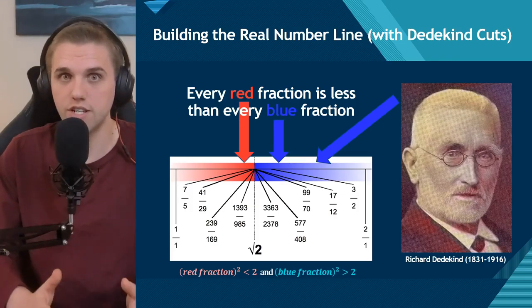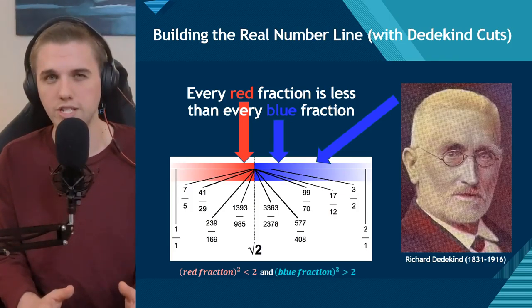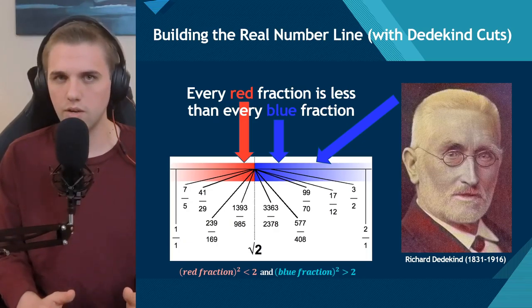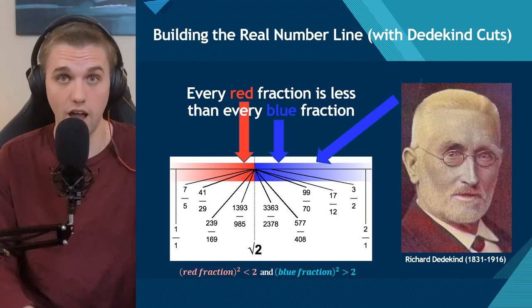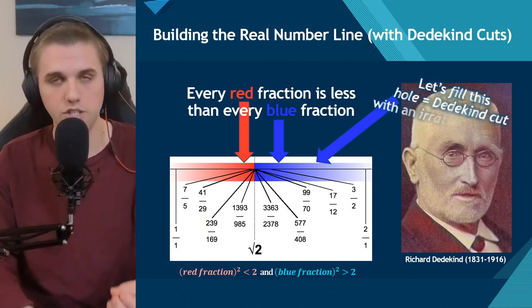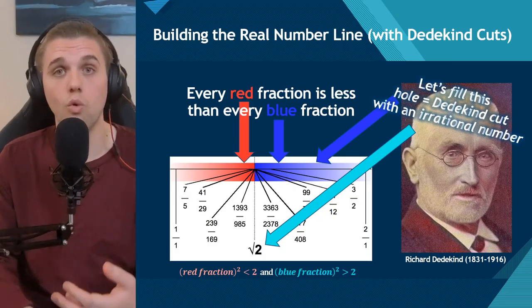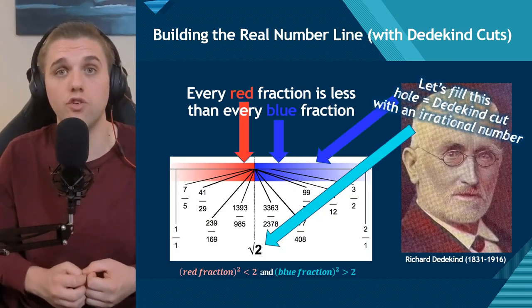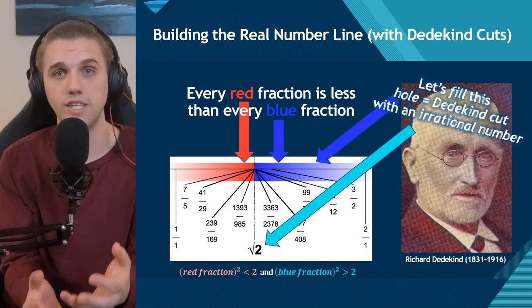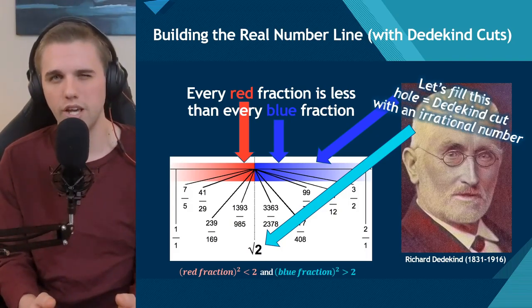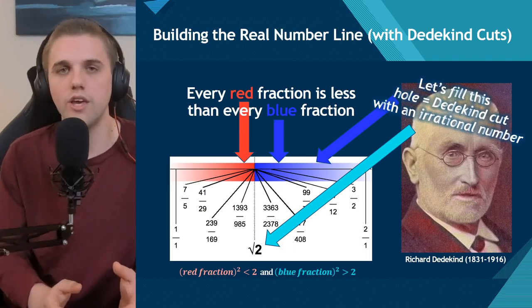So let's assume there isn't a rational number to put here — this hole is left unfilled. Richard Dedekind would fill this hole, which he called a Dedekind cut, with an irrational number. He just kind of created the object and decided that it exists in the mathematical universe.